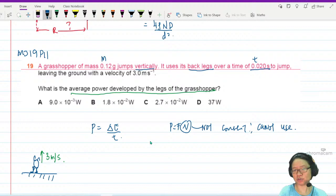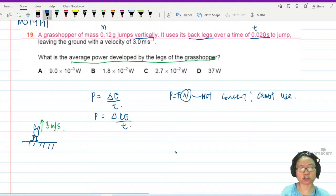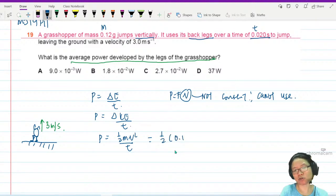So change in kinetic energy over time - the increase in kinetic energy is actually half mv squared over t. We can substitute the mass 0.12 grams, need to convert to kg. The speed is 3 squared divided by 0.020.